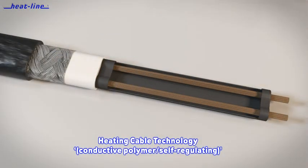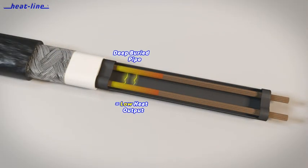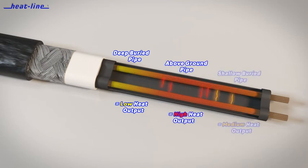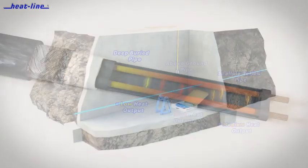Heat-Line self-regulating heating cables automatically adjust heat output at each point microscopically along their length. Heat is supplied safely and efficiently when and where needed, increasing heat output with cold and decreasing heat output with warmth. They will not overheat and can be fully insulated to improve efficiency.